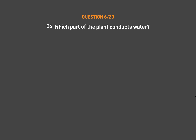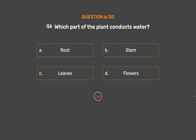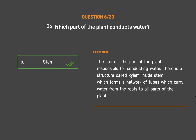Question 6: Which part of the plant conducts water? Option A: Root, Option B: Stem, Option C: Leaves, Option D: Flowers. The correct answer is Option B, Stem. The stem is the part of the plant responsible for conducting water. There is a structure called xylem inside the stem which forms a network of tubes that carry water from the roots to all parts of the plant.